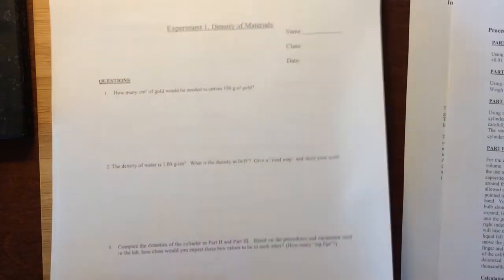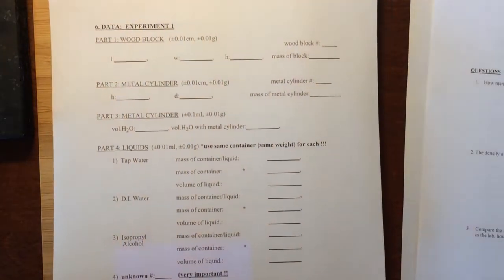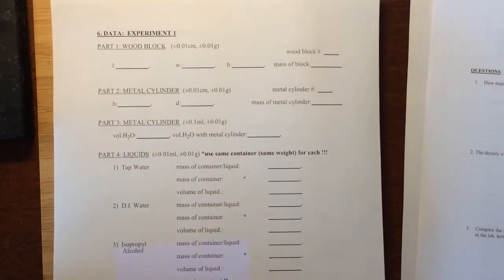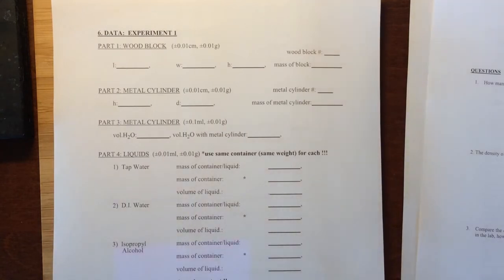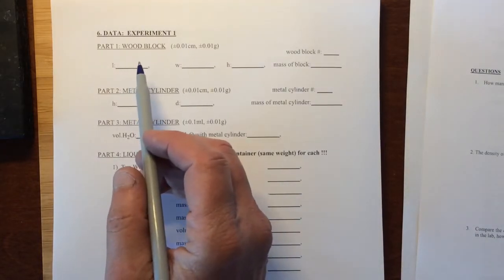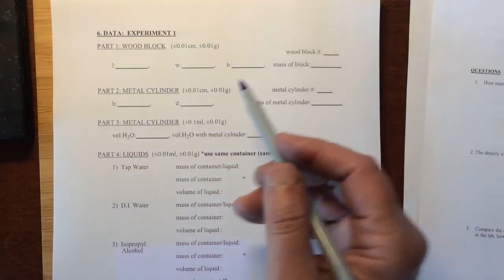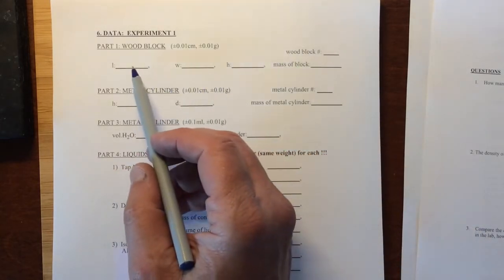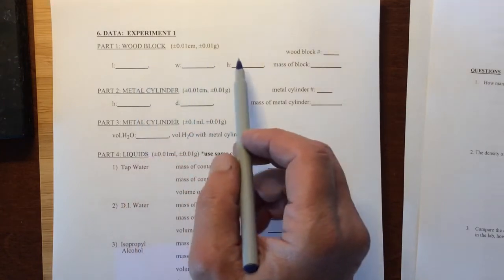So what I shall do is go through and just visualize what the data is, and then you are to write down the various things in the spaces required. In part one, we're going to ultimately find the density of a wooden block, but what we have to do is find its volume, and to do that we measure its length, width, and height.